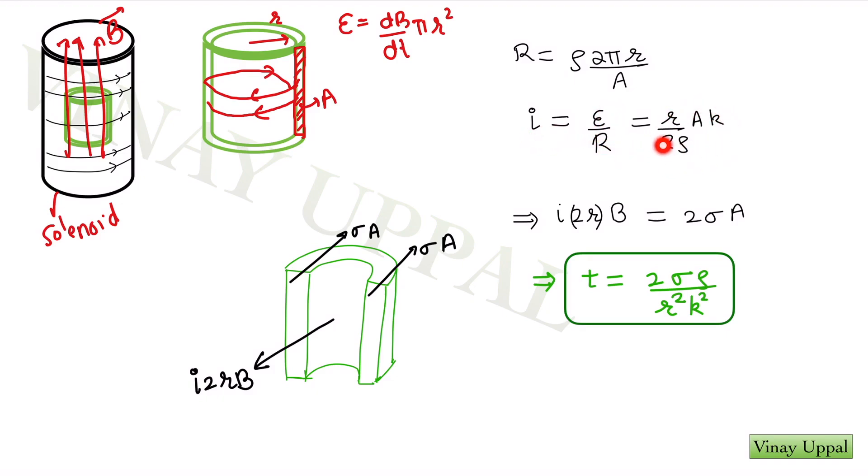And now I can simply get the current by dividing E by R. And this is what you'll get the current as. Here K comes because of the fact that B is given to be KT. So I'll have K times pi r squared as my emf. Okay, now first half of the solution is done in which we got the current. Now let's calculate the force.